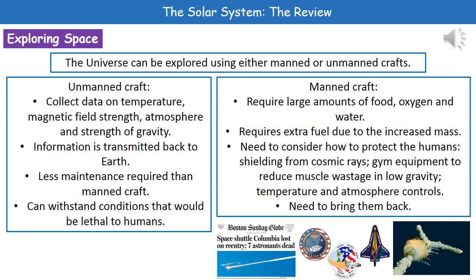As humans, one of the things we like to do is explore places we haven't been, and the universe is one of those big unknowns. We've got two options for how we can explore the universe: we can use either manned or unmanned crafts, and each has its own advantages and disadvantages. Unmanned craft are ones that don't have humans on them — we can send up probes into space and they collect data on temperatures, magnetic field strengths, atmospheres, and strength of gravities.